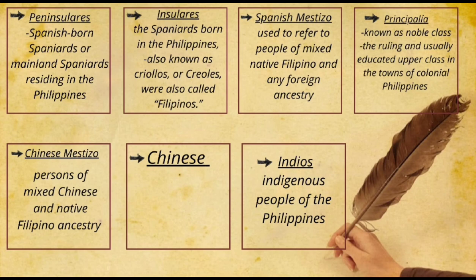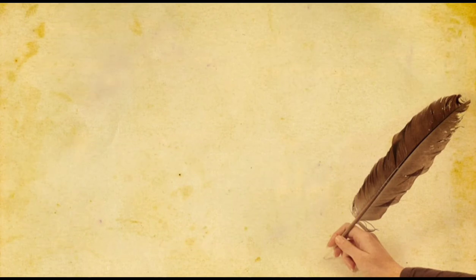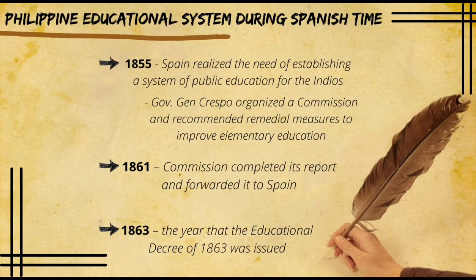Fifth, the Chinese mestizo was a person of mixed Chinese and native Filipino ancestry during the Spanish colonial era in the Philippines. Sixth is the Chinese, and seventh or last are the Indians — the indigenous people of the Philippines.